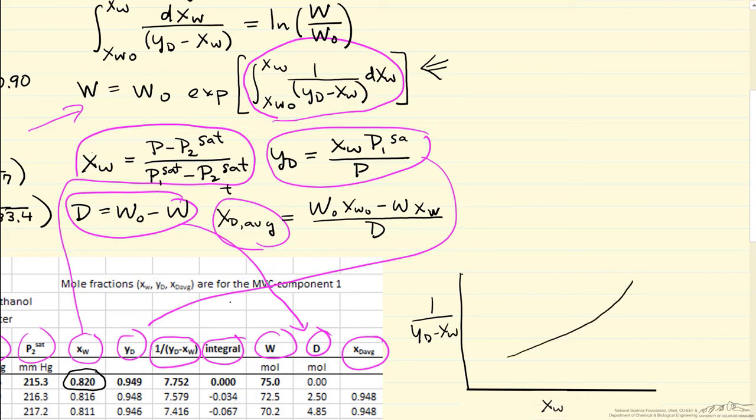Let's say the function looks something like this. We're starting at a high concentration, x_w zero. Essentially in this small step, you can see x_w decreased for our first step.